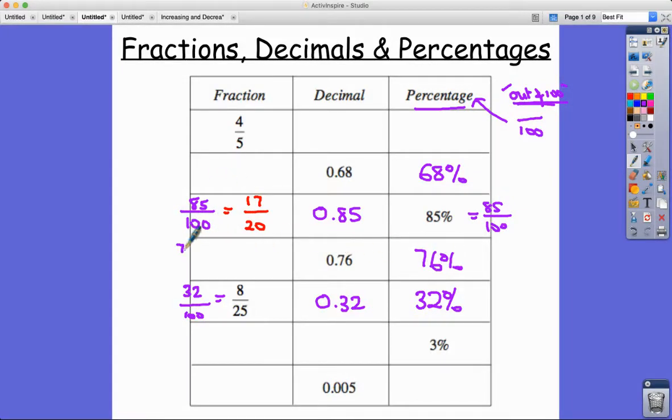76 percent, well that's 76 over 100. I think I can simplify that down. I can divide by 4: first divide by 2 and get 38 over 50, and that can be simplified again to my final answer of 19 over 25.